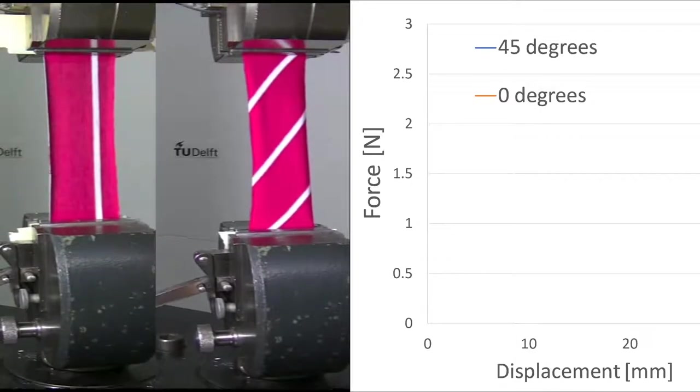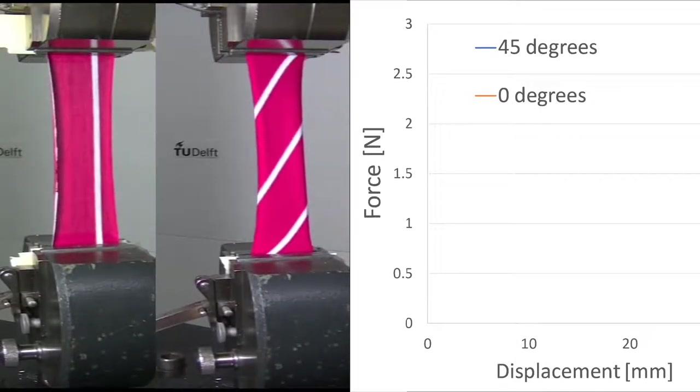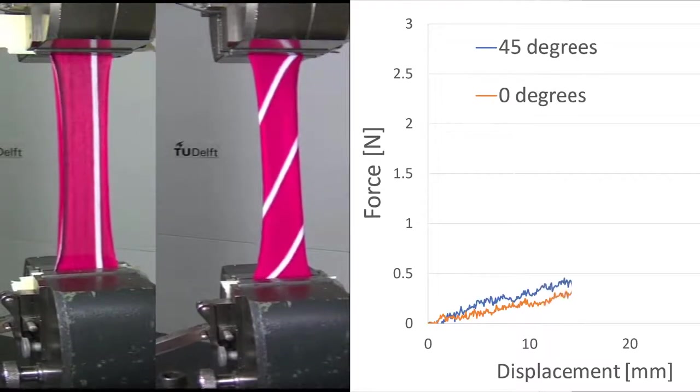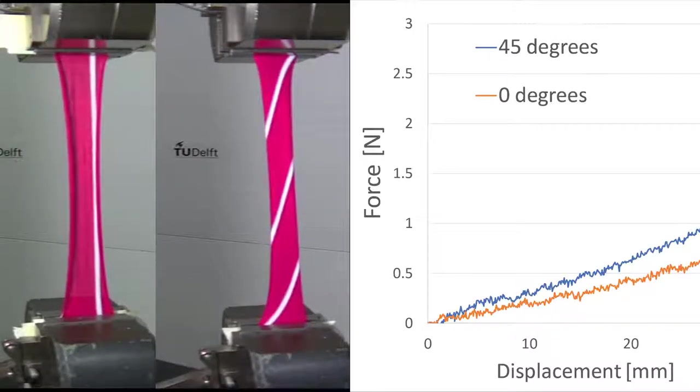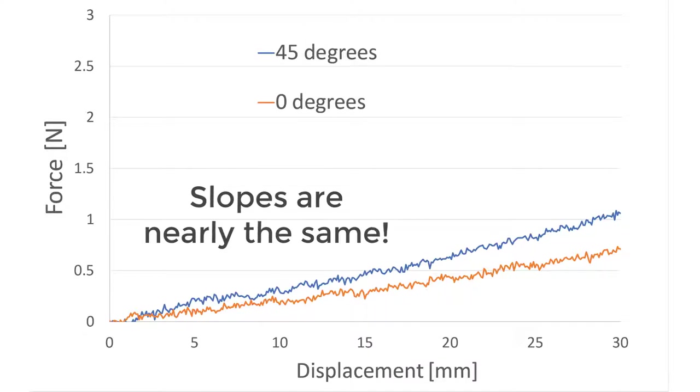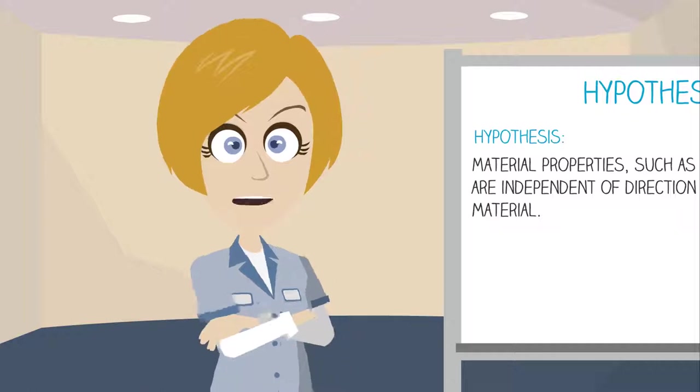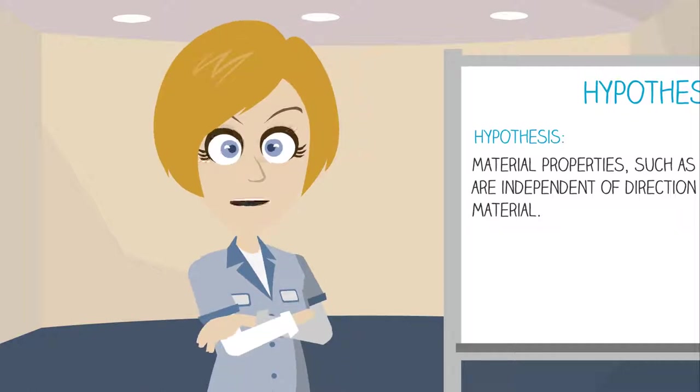Here you can see the footage of the t-shirt material side by side. As the test progresses, you can also see the force deflection curve being generated by the test setup. So what do we see? It seems that the slopes of the two curves are nearly the same. So this material is, in fact, supporting a hypothesis. But we shouldn't get too excited yet.